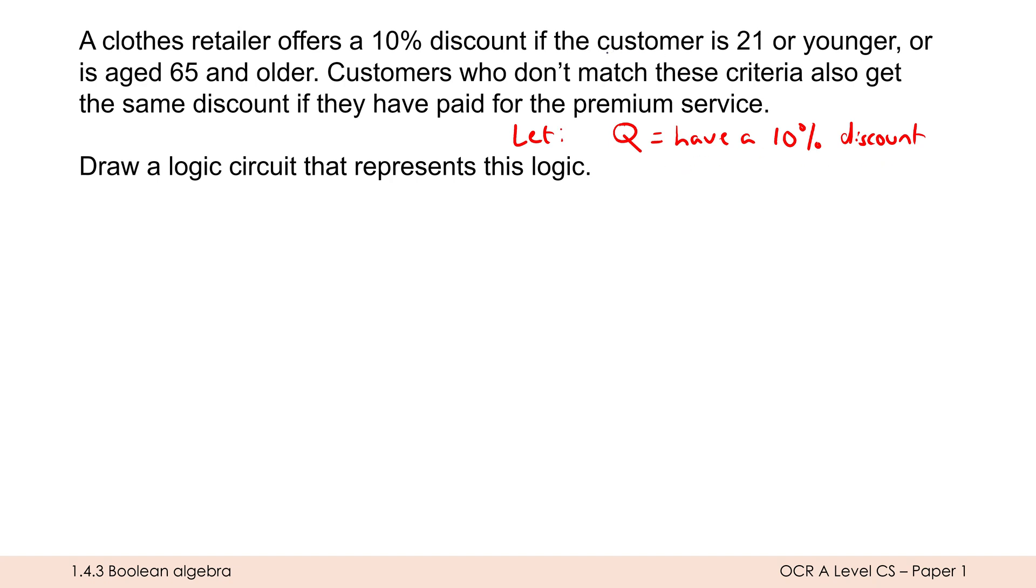What else is important to check here? What else is Boolean? Well, they're going to potentially be 21 or younger. Let's do Y for younger. Let's say is 21 or younger. We also have if they are age 65 or older. So let's do an O for that. Then we have customers who don't match these criteria also getting the same discount if they have paid for a premium service. So let's do P as premium service. You might find the exam question sort of do this assignment job for you. You might also need to do it to answer the question.